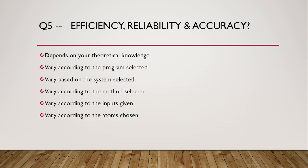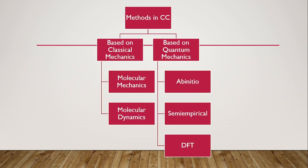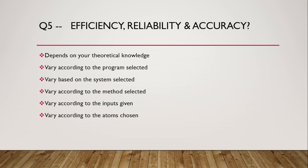Efficiency, reliability, and accuracy depend upon many factors: theoretical knowledge, the program selected, the system selected, the method selected, inputs given, and atoms chosen. For example, if you are considering a protein or any biological system and not accounting for R and S configurations separately, the biological activity of the R and S configurations may differ — so accuracy depends upon all these factors. These are the methods in computational chemistry and we will be discussing them in the next video. Thank you.